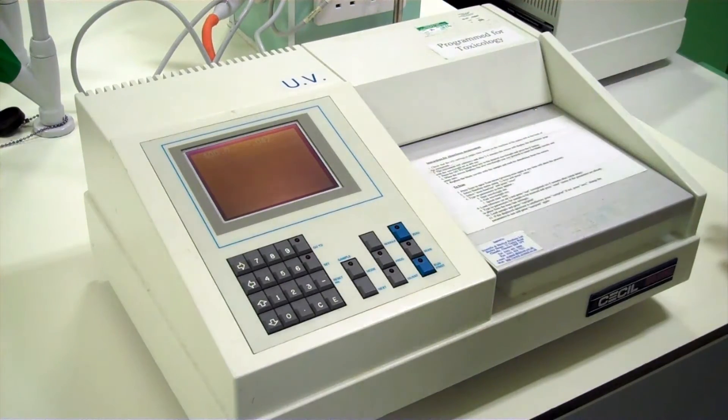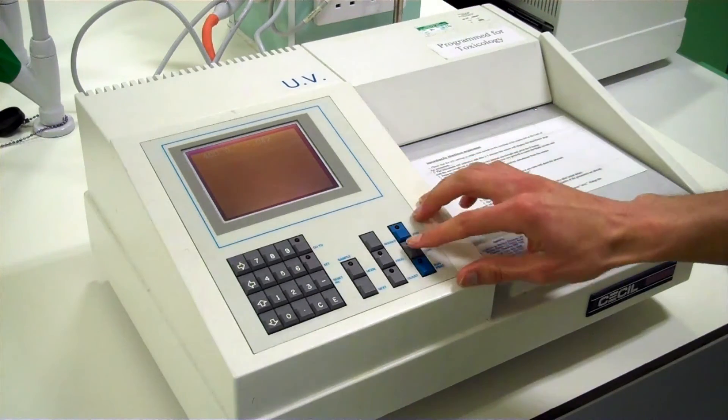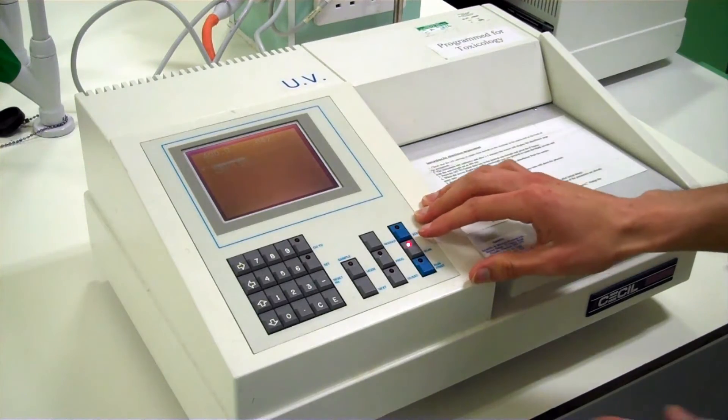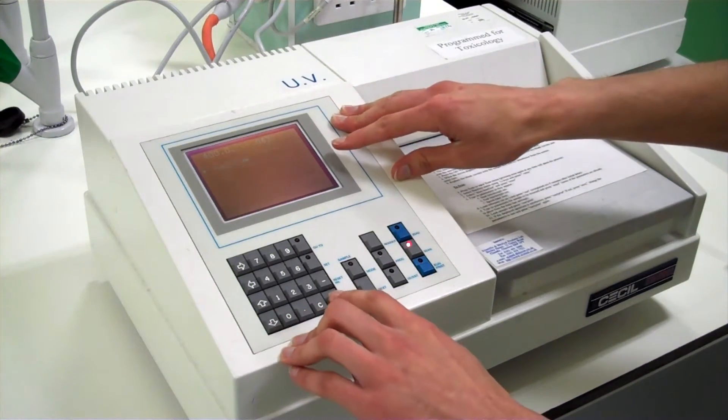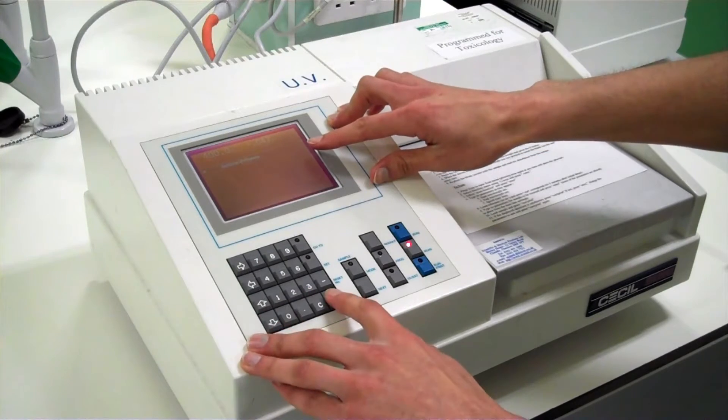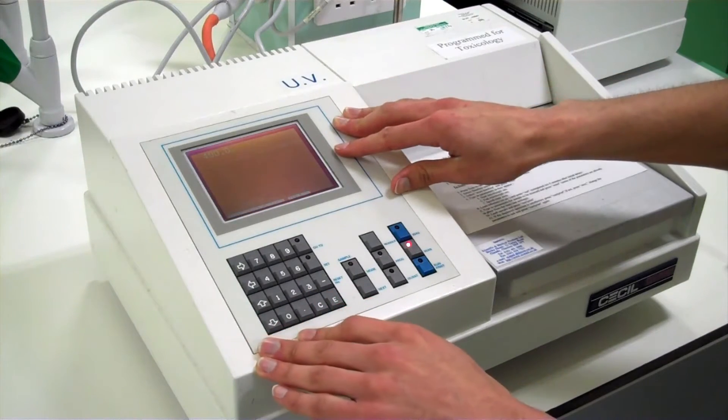To set the baseline of zero with our blank we press the scan button to open up the scan menu. We then go down and select baseline menu then store baseline which will store the absorbance of the blank.